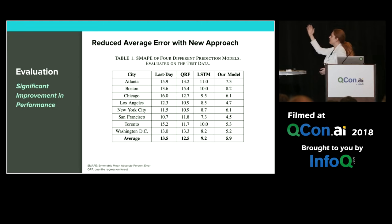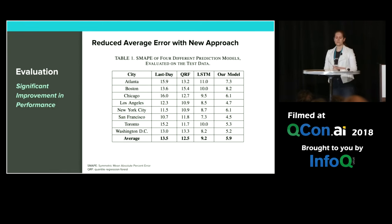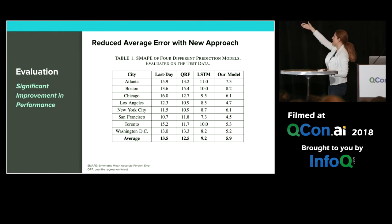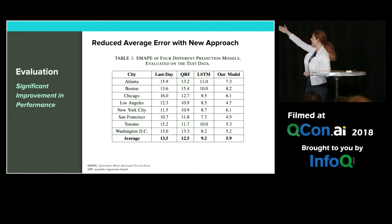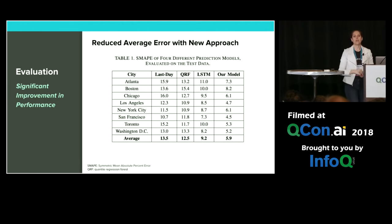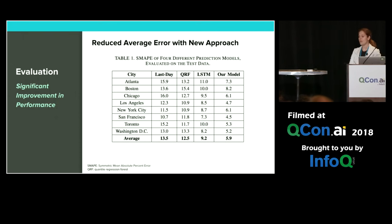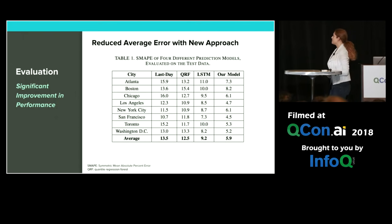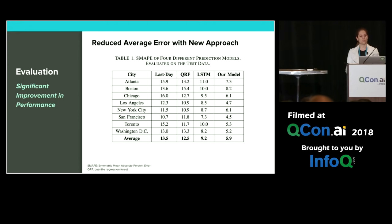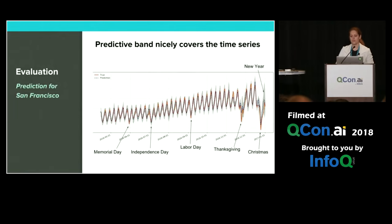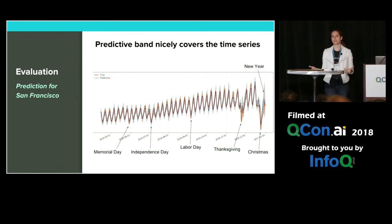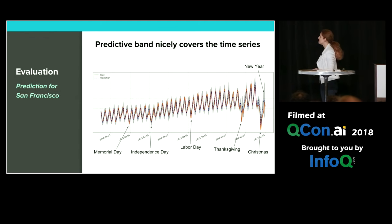Let's look at some of the metrics from this new approach. As discussed, comparing to the naive approach — in this case last day — is something we should be doing, shown in the first column. We've also compared it to quantile regression forest and a vanilla LSTM method. The last column is our model. As you can see, we're greatly reducing the average error with the new approach, which seems extremely promising. In addition, we've also developed new techniques to forecast uncertainty for special events such as holidays.